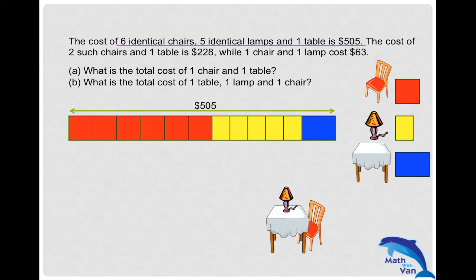Six identical chairs, five identical lamps, and one table is $505—this is how the model would look. The cost of two chairs and one table is $228: two red blocks and one blue totaling $228. The third expression: one chair and one lamp cost $63.